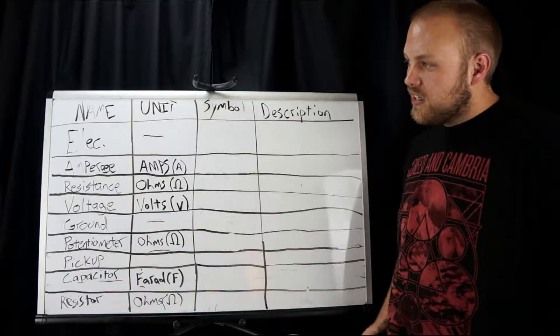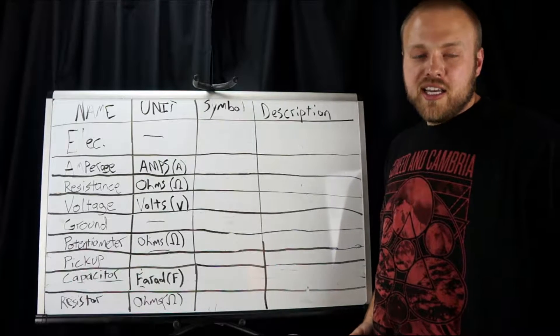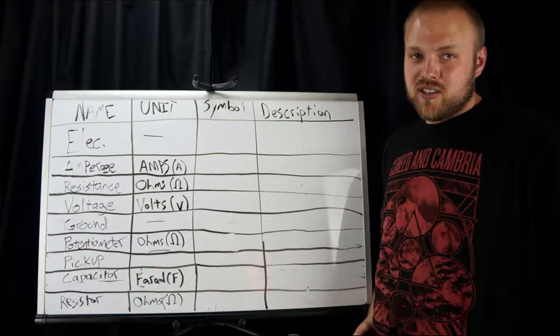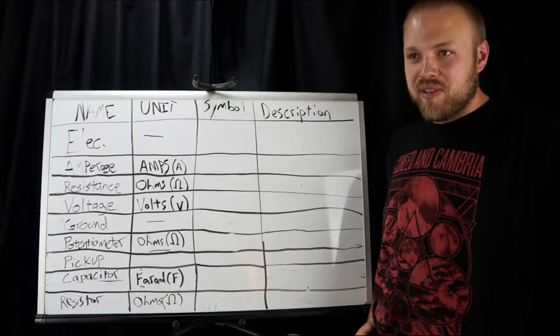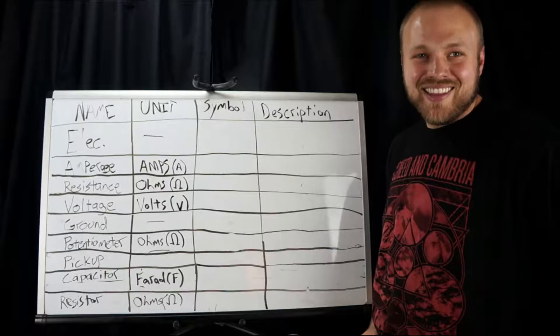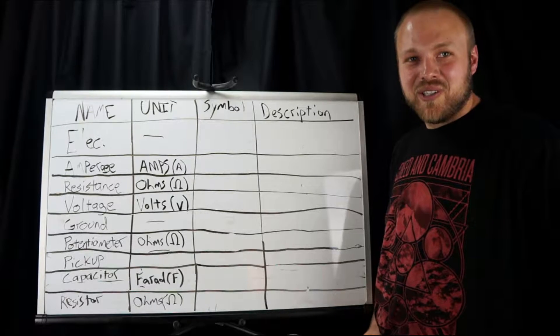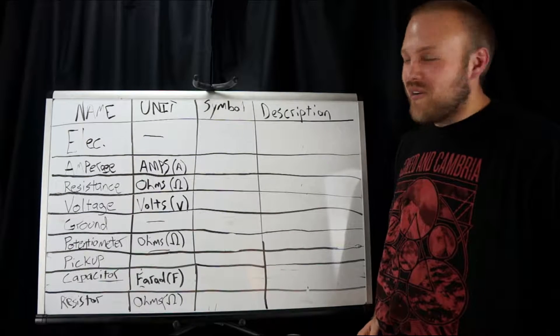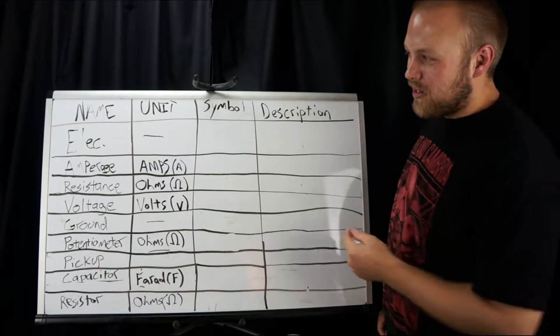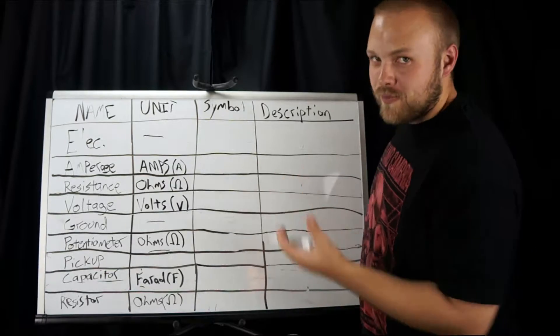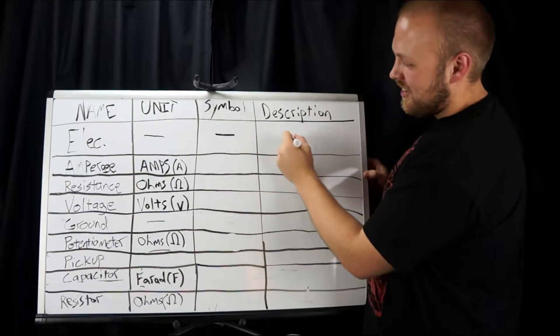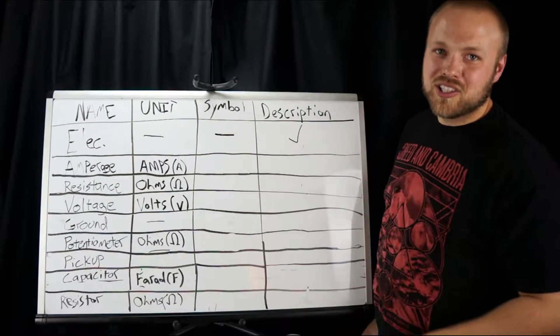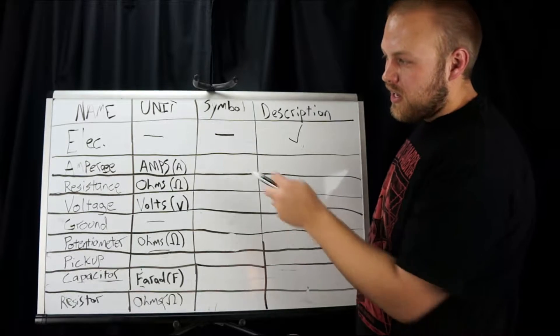Electricity doesn't have a unit, but what it is is the movement of electrons. Electrons break off of things and then travel around and it's kind of wizardry and you can get power from it. They don't have a symbol because electricity is just a thing. It's a form of energy and we talked about it.